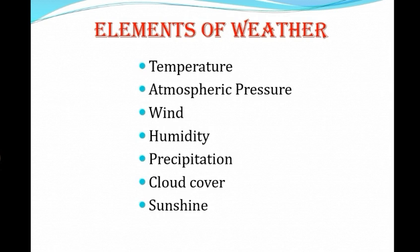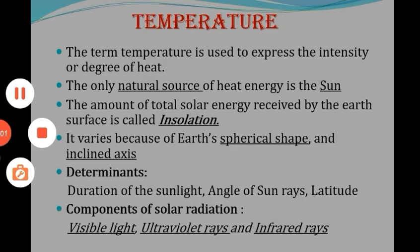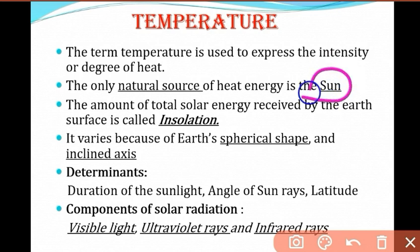We will discuss each element one by one. First, temperature. The term temperature is used to express the intensity or degree of heat. The degree of heat is measured by temperature. The main source of heat energy is the sun. The amount of total solar energy received by the earth's surface is called insolation.